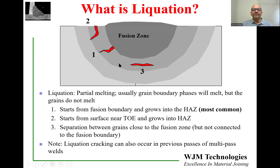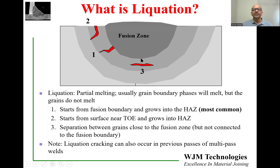There are three different types of liquation cracks. The crack labeled as number one is perhaps the most common type, where the crack appears to start right at the boundary of the fusion and partially melted zone and extends into the PMZ or even into the heat-affected zone. The second type can occur right at the toe of the weld, where the crack might appear to start from the surface near the toe and then extends into the PMZ or heat-affected zone. The third type is in the heat-affected zone or partially melted zone but is not directly linked to the fusion zone.